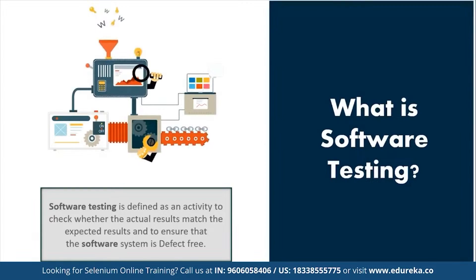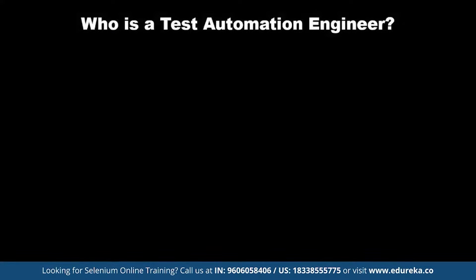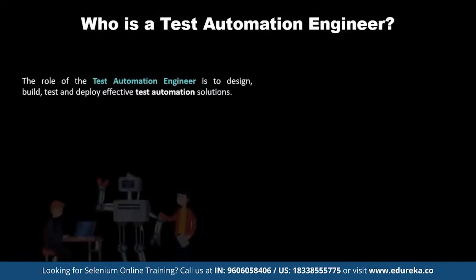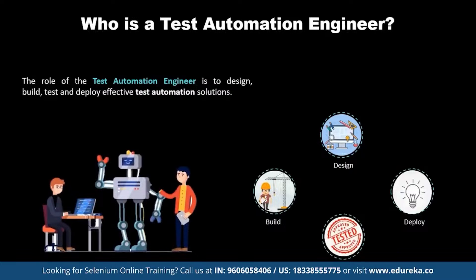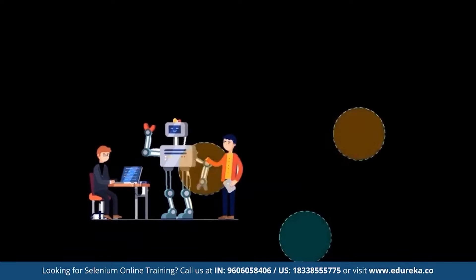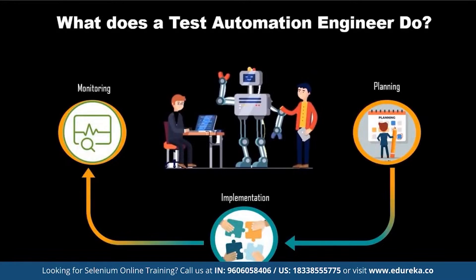Now that you know what Software Testing is, let's see who is a Test Automation Engineer. The role of the Test Automation Engineer is to design, build, test and deploy effective test automation solutions. To fulfill this role, the Automation Engineer applies appropriate automation technologies to meet the short and long term goals of the testing organization. An Automation Engineer basically utilizes technology to improve, streamline and automate a manufacturing process, and is responsible for planning, implementation and monitoring of such technology.